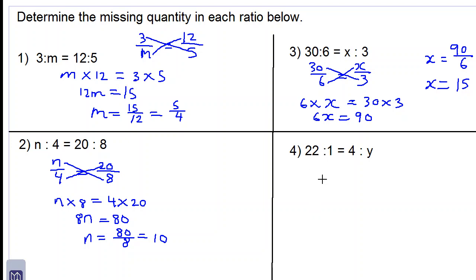Number 4: 22 to 1 is written as 22 over 1. 4 to y is written as 4 over y. We cross multiply: 22 times y is equal to 1 times 4. We get 22y being equal to 4.